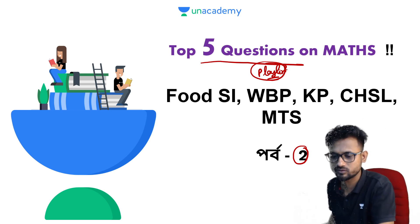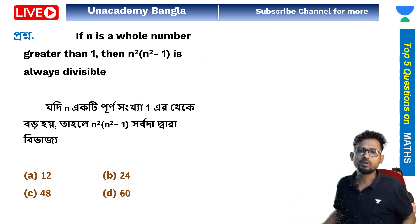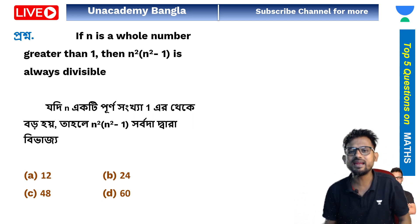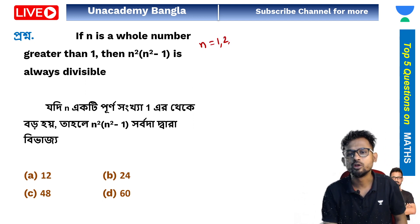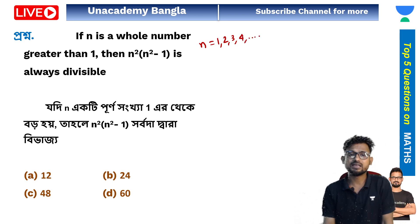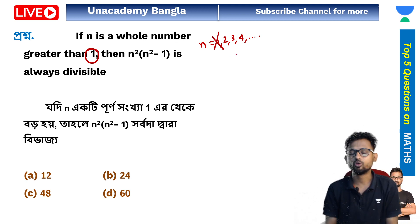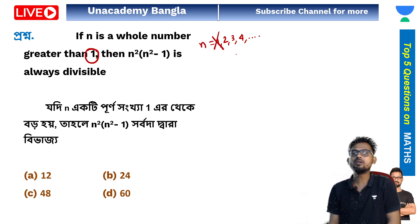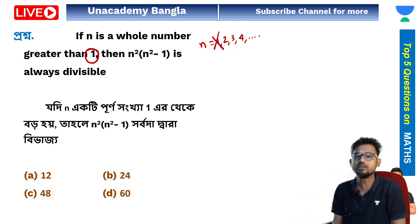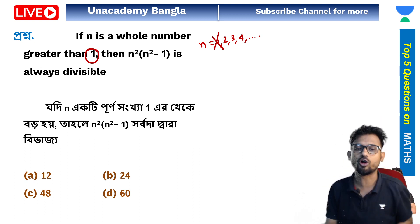So let's see the first question. n is a whole number. n has values: n is equal to 1, 2, 3, 4 and so on. n equals 1, and we need to evaluate n squared into n squared minus 1.